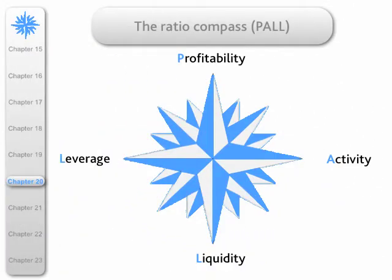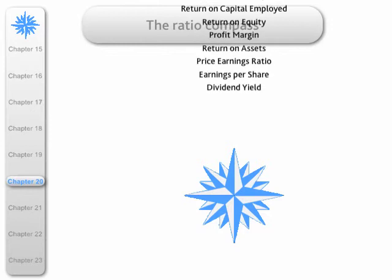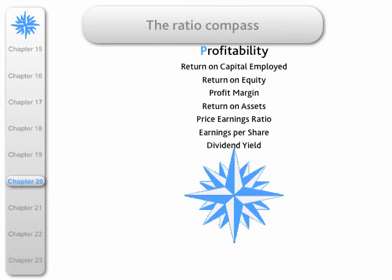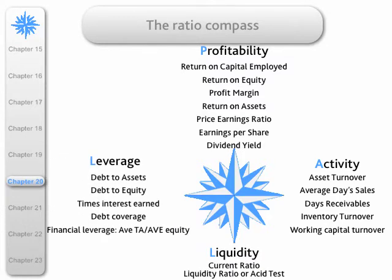Here is the ratio compass, PALL. I'll make it a little bit more explicit and put in the actual ratios — those are the profitability ratios we will look at, secondly the activity ratios, thirdly the liquidity ratios, and finally the leverage ratios. What we will do now is have a look at Home Depot and see how those ratios have changed over the period of the case, that is 2007 to 2009.